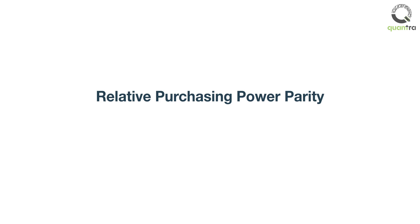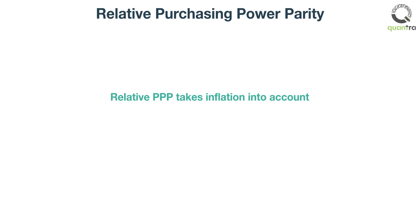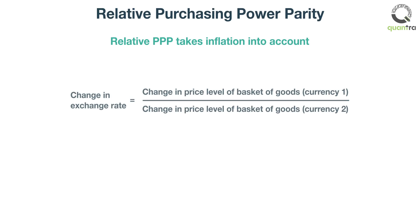Since absolute purchasing power parity doesn't reflect reality, we move to relative purchasing power parity. Relative PPP takes inflation into account by considering the relationship between changes in the exchange rate and changes in the price ratio. Note that price levels will increase if there is an increase in inflation.